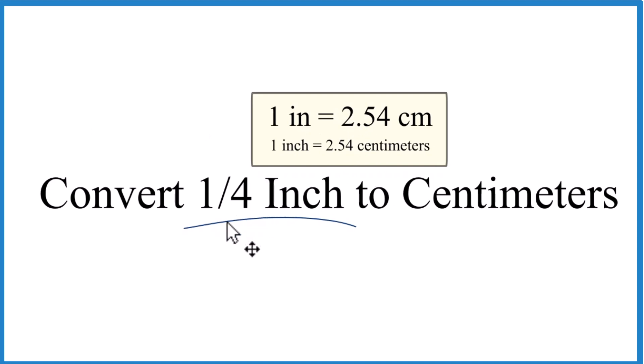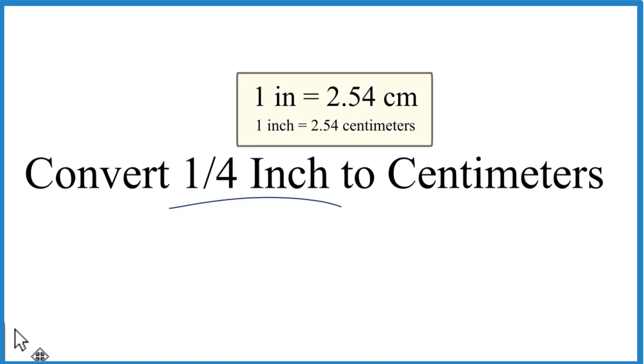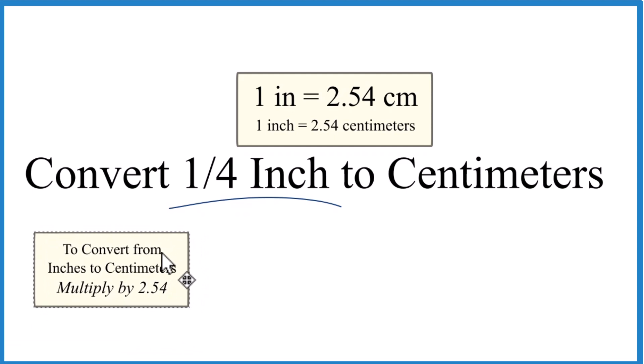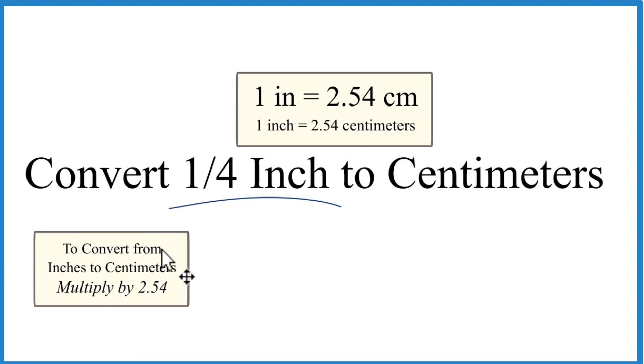All we need to do to convert one-quarter inch to centimeters is multiply inches by 2.54. So whether it's one-fourth inch or any other number of inches, you just multiply by 2.54.